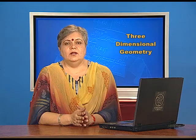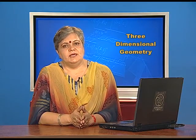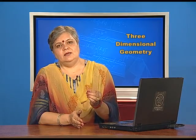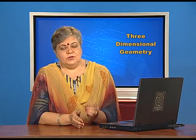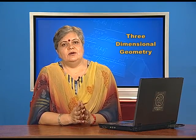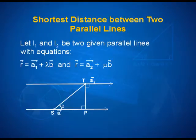We said that the distance between two parallel lines can always be calculated using a point on one line and finding its perpendicular distance from the other line. But can we use what we just discussed to derive a formula for the shortest distance between two parallel lines? If two lines are parallel, their equations are r = A1 + lambda*b and r = A2 + mu*b, with the same direction vector b in both equations.